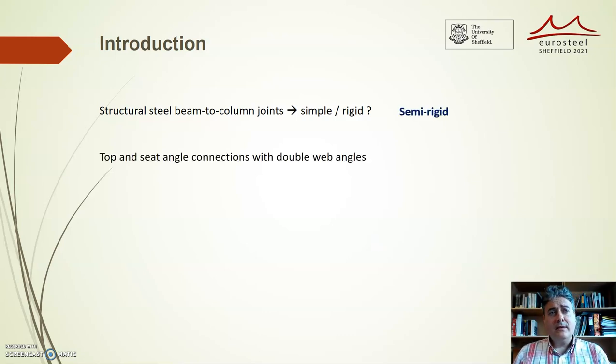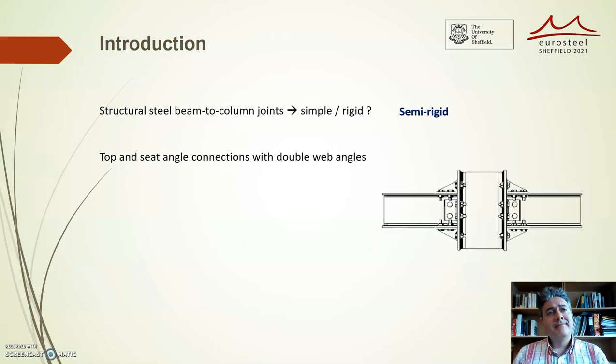Top and seat angle connections with double web angles are semi-rigid connections profusely used in the North American construction tradition. They have economic advantages and they are suitable for reducing assembly times.